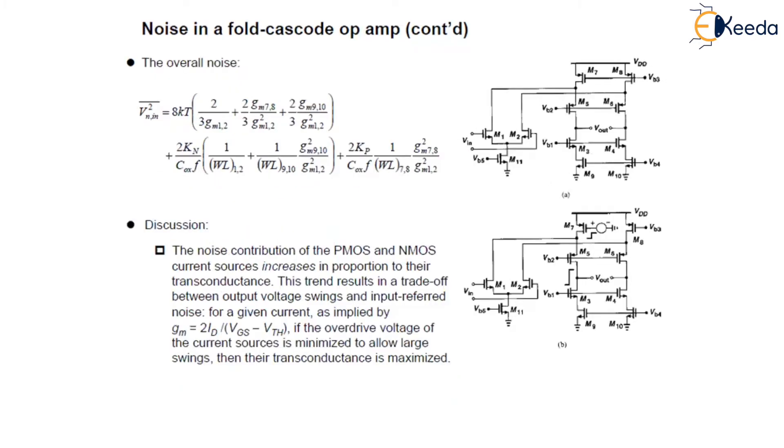So the overall noise we have written by adding both the thermal noise, the input-referred thermal noise, and the flicker noise. This is the overall noise found in this folded cascode op-amp.